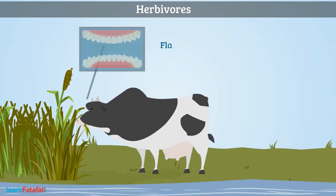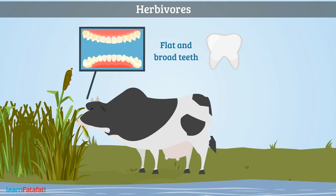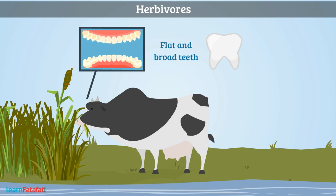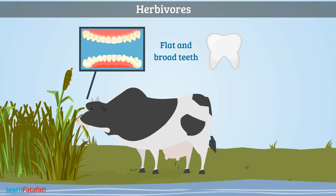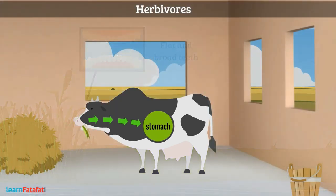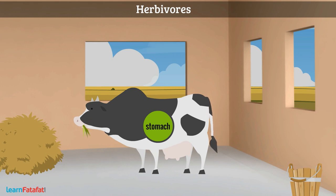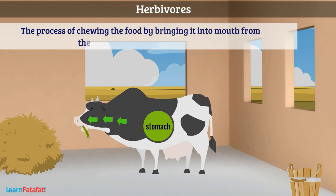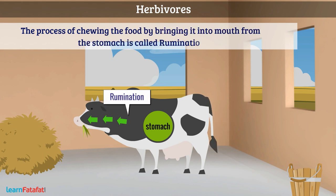They have flat and broad teeth which help them to pull the plant leaves and grind them. These animals first eat food and fill their stomach. When they are relaxed, they bring the food back into the mouth for chewing it properly. The process of chewing the food by bringing it into the mouth from the stomach is called Rumination.